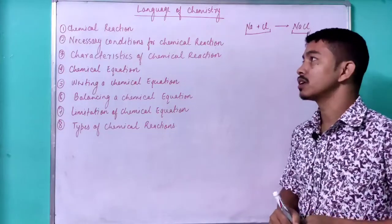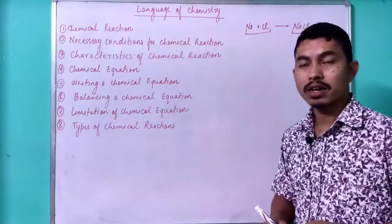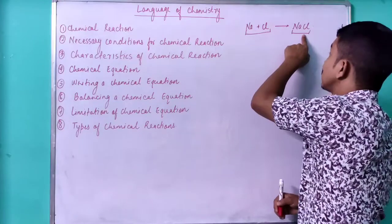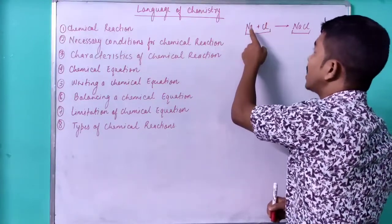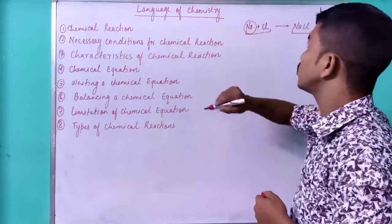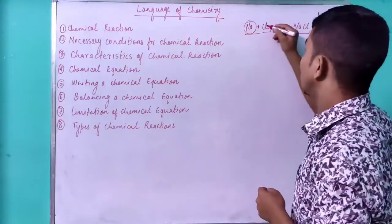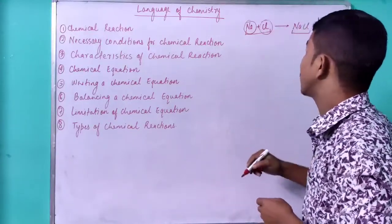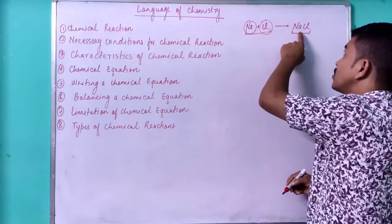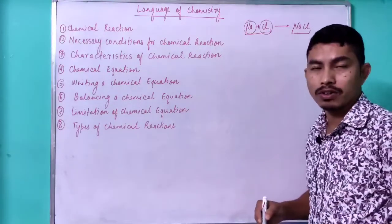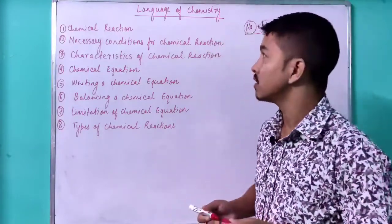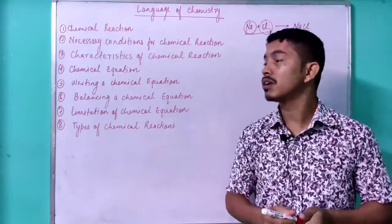Such reactions are called chemical reactions. In a chemical reaction, the product formed has completely new properties compared to the combining elements. For example, sodium is a very explosive metal and chlorine is a poisonous gas, but sodium and chlorine combine to give salt — which is non-poisonous and which we eat in our day-to-day life.